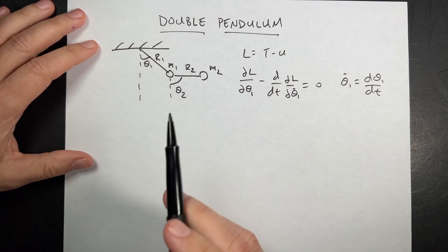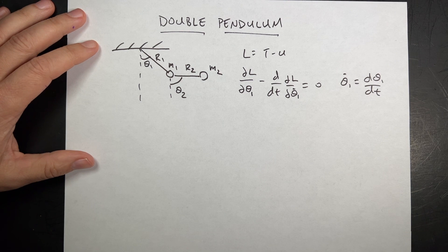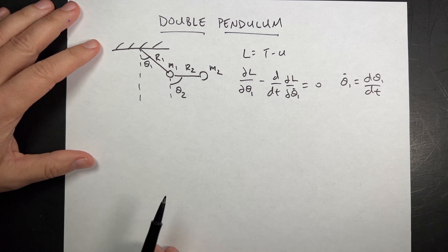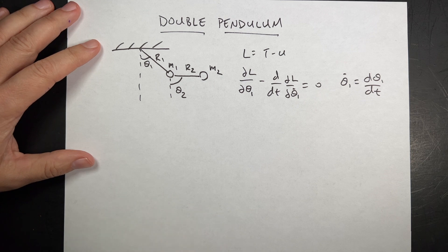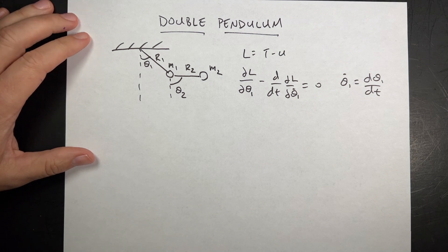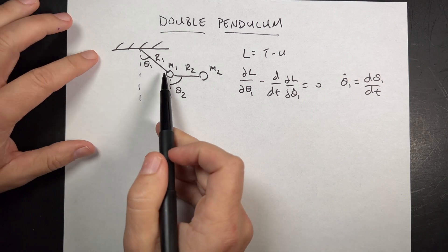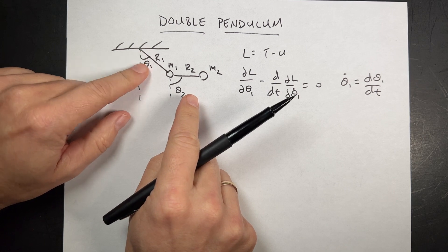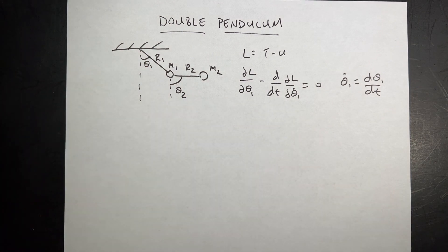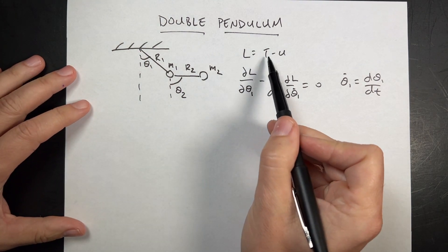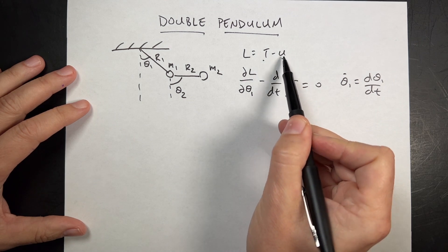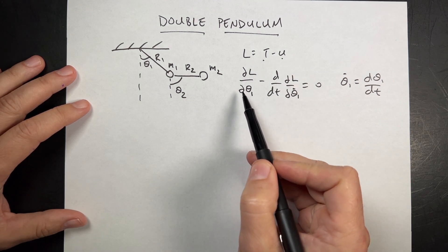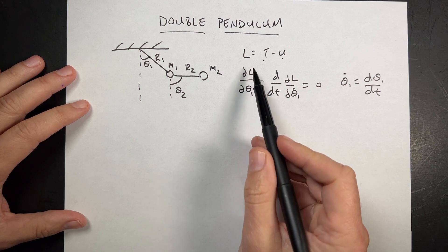I really want to do this as an example of how you can solve a whole bunch of really complicated Lagrangian problems by using Python. So let's just set this up and then we'll switch over to Python. In this system I have two degrees of freedom: these two angles, theta 1 and theta 2. The idea of Lagrangian mechanics is to define the Lagrangian as kinetic energy T minus potential energy U, and then we can get equations of motion from the Euler-Lagrange equation.